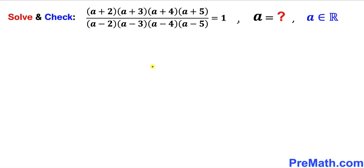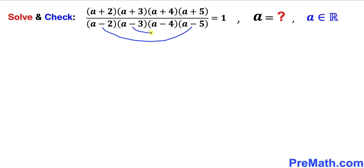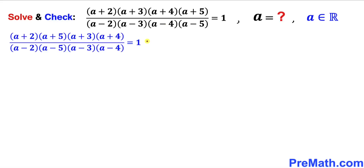Let's get started with the solution. We'll focus on the left hand side and rearrange the terms. In the numerator, I'm going to pair (a+2) with (a+5), and (a+3) with (a+4). Likewise in the denominator, I'll pair (a-2) with (a-5), and (a-3) with (a-4) together.